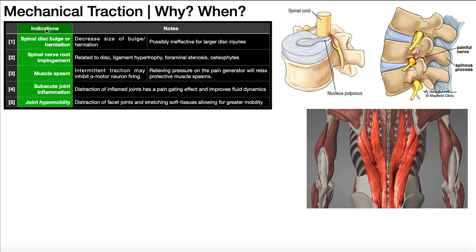Here are the five major indications for traction. The first is a spinal disc bulge or herniation. Here's one of the lumbar vertebrae, here's the disc above it, and presumably there'd be a vertebra on top. The disc here has bulged, herniated, and is protruding posteriorly to the left, compressing a nerve root, which would potentially cause radicular symptoms. If we apply traction, the vertebra above is pulled away from the one below, releasing pressure on the disc. It creates a negative pressure that can vacuum-suck or pull that protrusion back in a little bit, relieving compression on that nerve root. This can decrease the size of a disc bulge or herniation, but it's possibly ineffective for a larger disc injury — if the disc injury is small, it may be more effective.